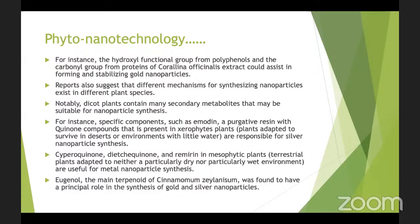Dicot plants contain many secondary metabolites that are suitable for the production of nanoparticles. This is the theory of phytonanotechnology — what phyto compounds and plant materials can be used for production of nanoparticles, and what types of nanoparticles can be produced. You can produce gold, silver, copper, or titanium — a variety of metal nanoparticles using phyto compounds. These are all examples showing different plant materials used for production of gold, silver, and copper nanoparticles.